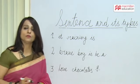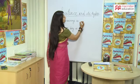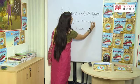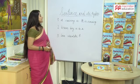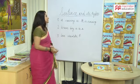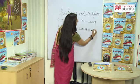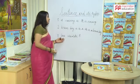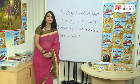So now I'll ask you how to arrange the words to turn them into meaningful sentences. The first sentence should be 'it is raining.' Is it raining outside boys and girls? No, it's not — it's a bright and sunny day! The second sentence, 'brave boy is he a,' becomes 'he is a brave boy.' And the third sentence will be arranged as 'I love chocolates,' because you all love chocolates!